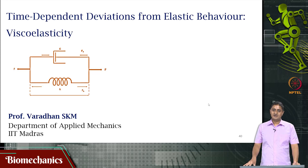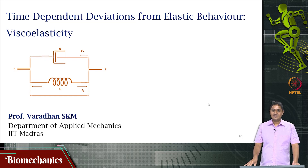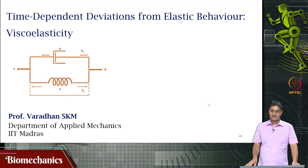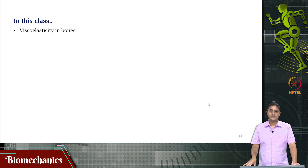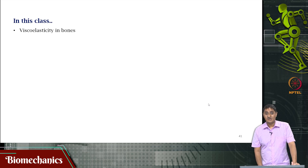Welcome to this video on biomechanics. In the last few videos we have looked at time-dependent deviations from elastic behaviour, that is viscoelasticity in biological materials. Specifically we looked at three models of viscoelasticity: the Maxwell model, the Voight model, and the standard linear model or the Kelvin model. In this video we will be looking at viscoelastic modelling of bones.